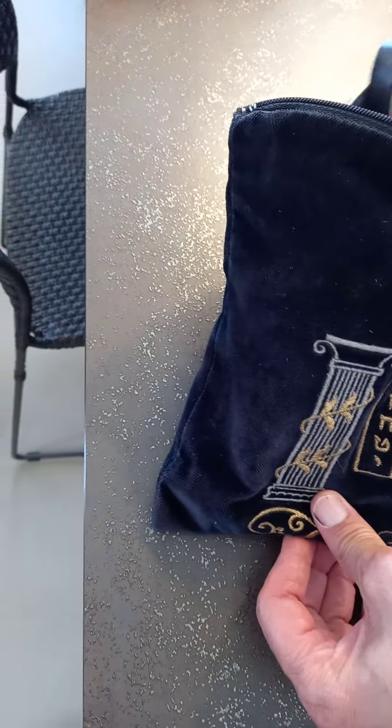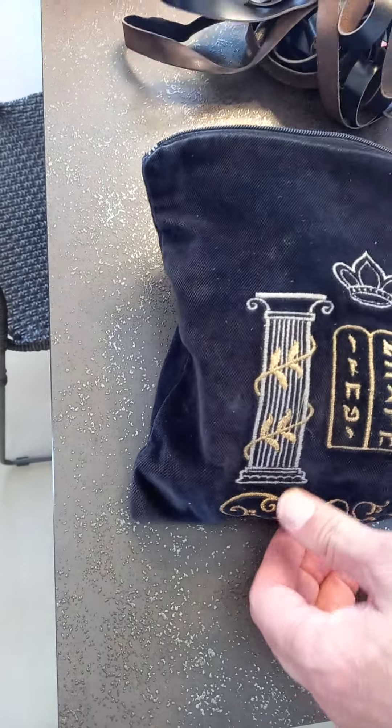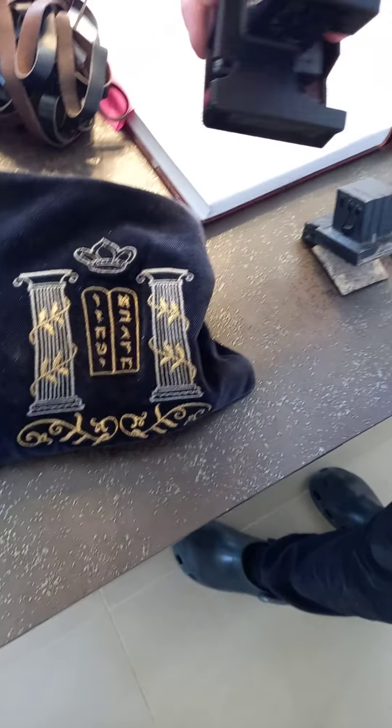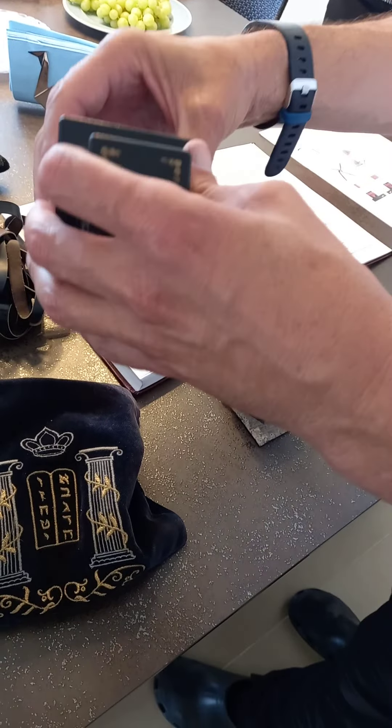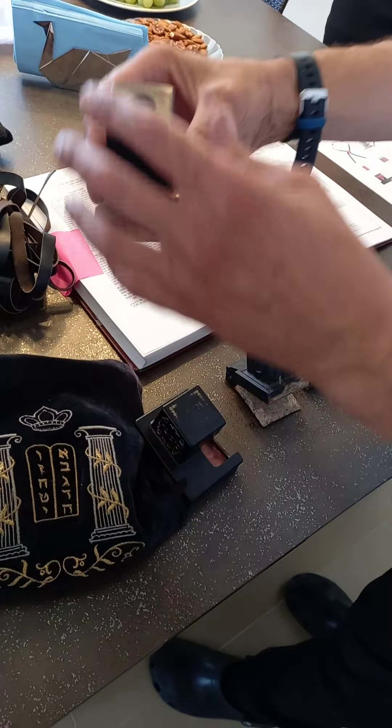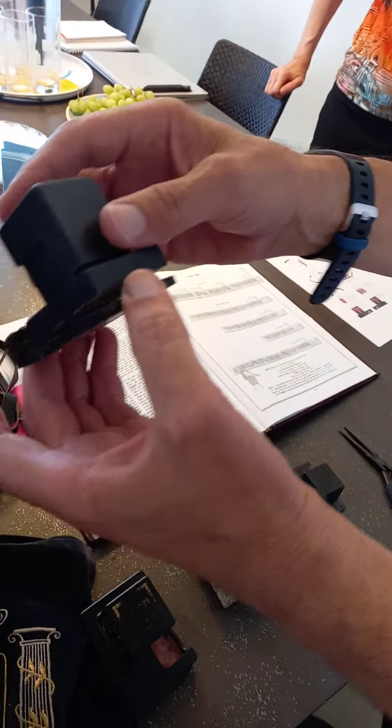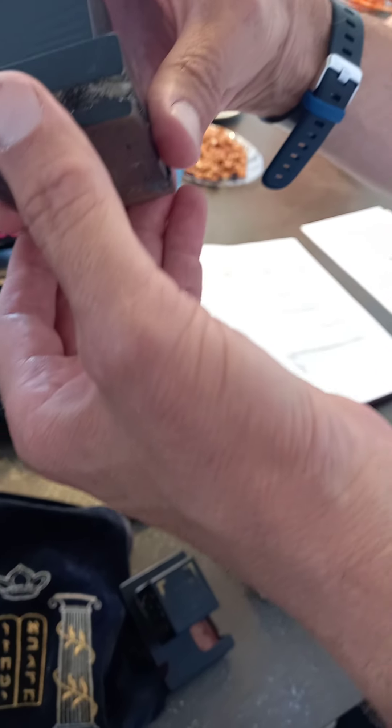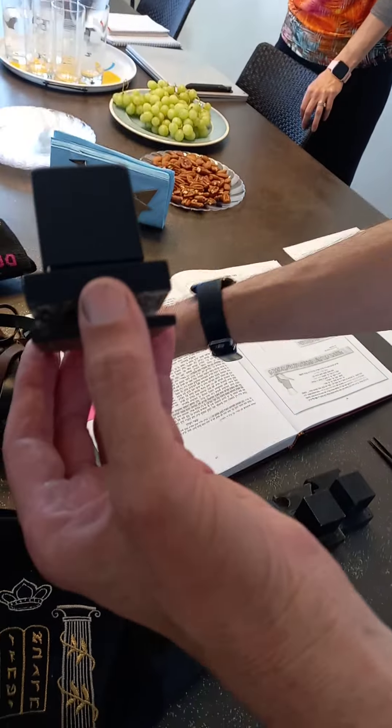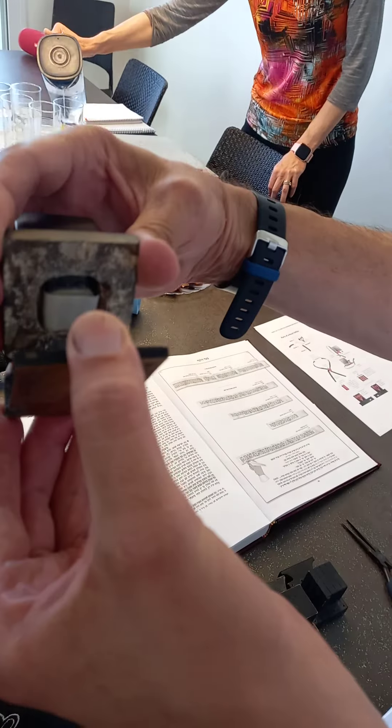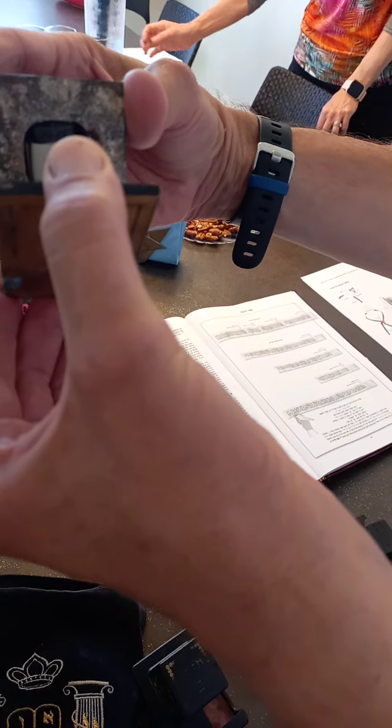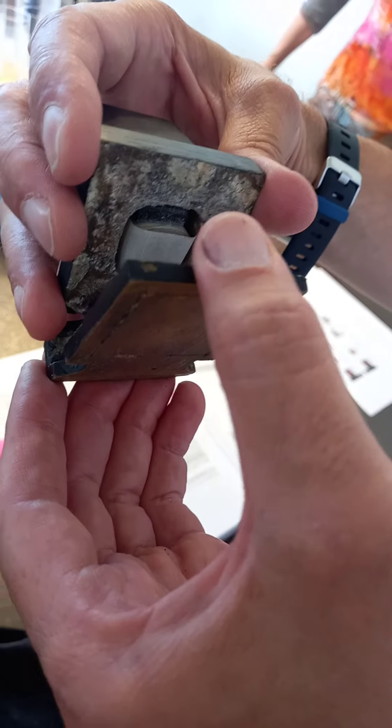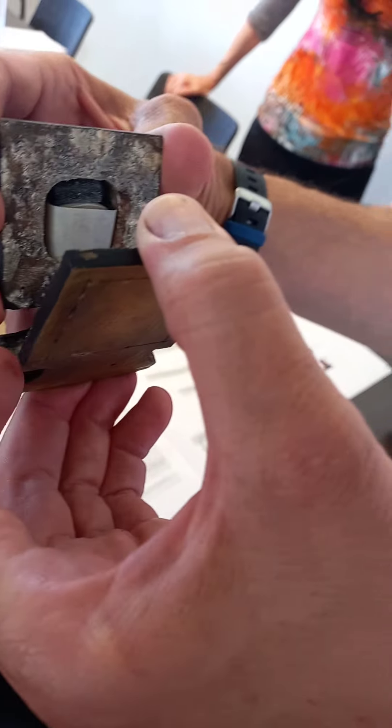So I took the liberty, I went to a special sofer who, it's not a simple thing to open these, so he used very special pliers. We actually opened them, and here we have the Shel Yad. By the way, the Batim are perfect and can be reused. The Retsu'ot need to be changed. And as you can see, the Shel Yad is in the singular, so there's one Parshia inside.